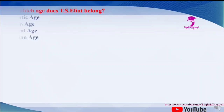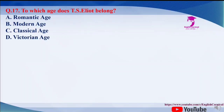Question number 17: to which age does T.S. Eliot belong? The options are A. Romantic age, B. Modern age, C. Classical age, and D. Victorian age. The correct answer of this question is B, that is the modern age.